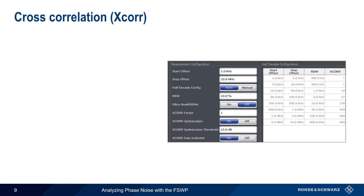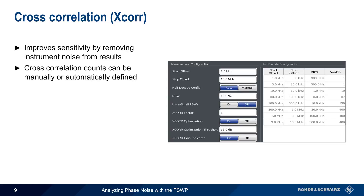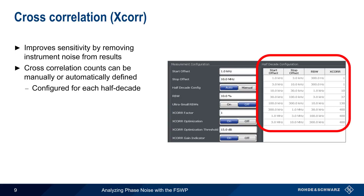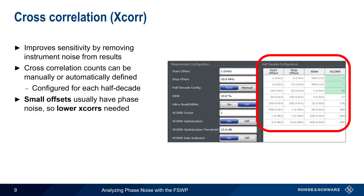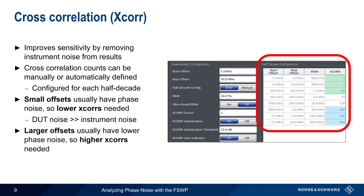The next most important settings are for cross-correlation. Cross-correlation improves sensitivity by removing instrument noise from the phase noise results. The number of cross-correlations can be manually or automatically defined, and are configured for each half decade. Phase noise tends to be higher at smaller offsets, so a lower number of cross-correlations are needed there — the DUT phase noise is much higher than the instrument noise. On the other hand, DUT phase noise is usually lower at larger frequency offsets, so a higher number of cross-correlations are needed to reduce the effects of instrument noise.